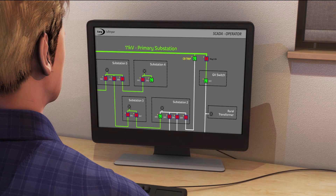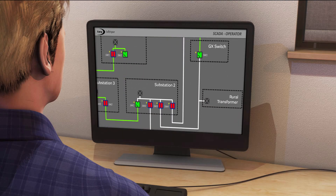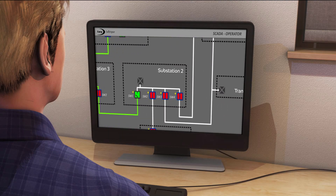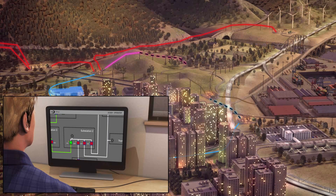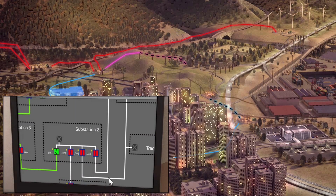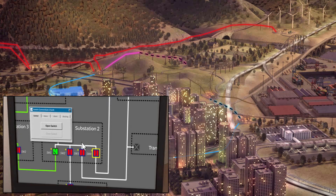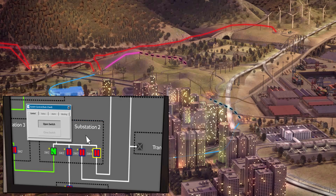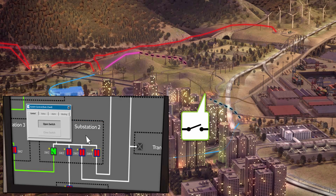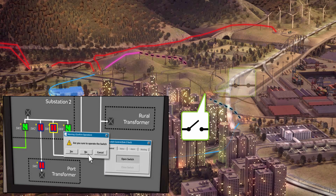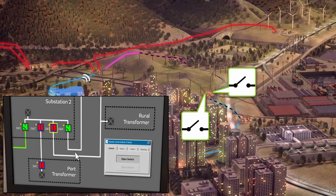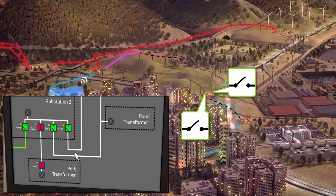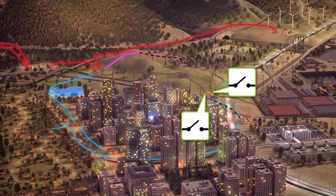The operator can now use the Lucy switchgear SCADA system to isolate this area and re-route power to customers without a supply. The operator remotely opens the incoming switch from the primary substation to substation 2, and then opens the outgoing switch from substation 2 to the rural community. This totally isolates the fault area from the rest of the network.